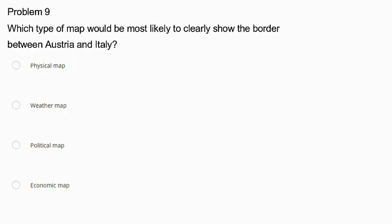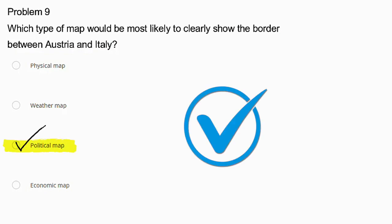Problem number 9. Which type of map would be most likely to clearly show the border between Austria and Italy? Physical map, weather map, political map, or economic map? A political map would be most likely to clearly show the border because it focuses on boundaries and cities. A physical map shows natural features like water and mountains, a weather map shows climate patterns, and an economic map shows resources and economic activities. So the best answer is definitely political map.